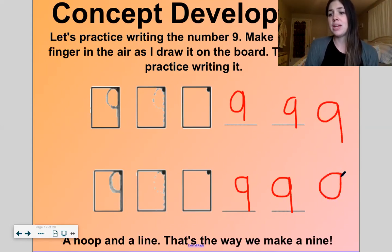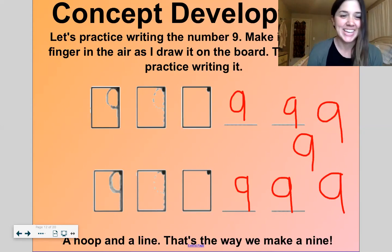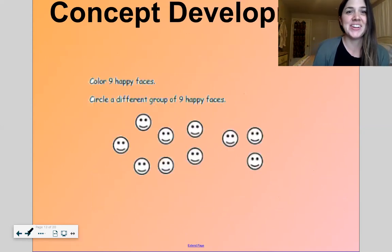A hoop and a line, that's how we make a nine. I like to not lift my pencil or my marker up at all when I'm doing that. A hoop and a line, that's how we make a nine. Good work.